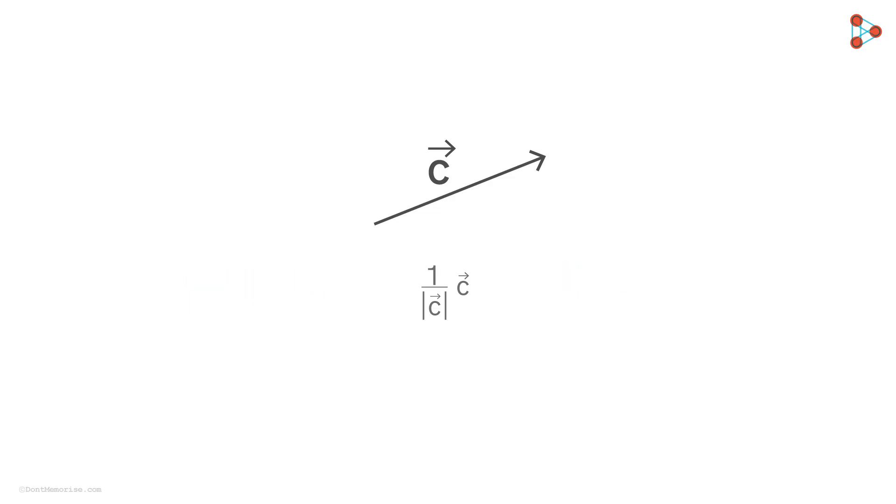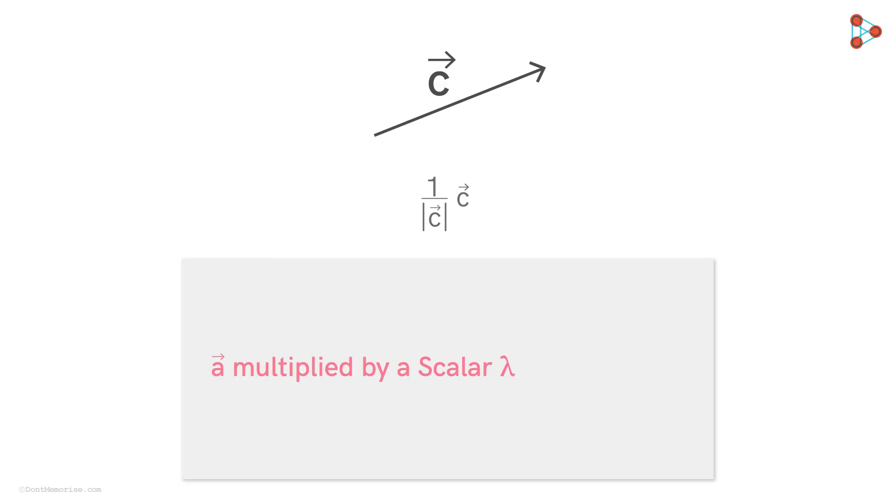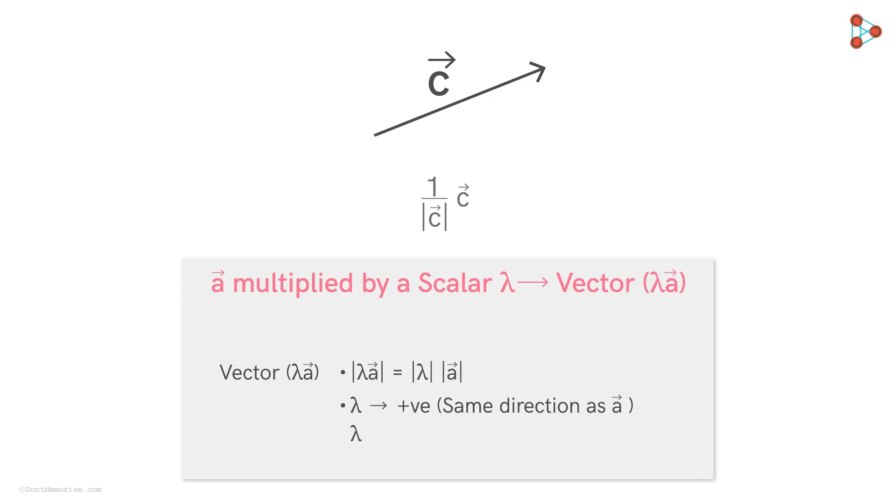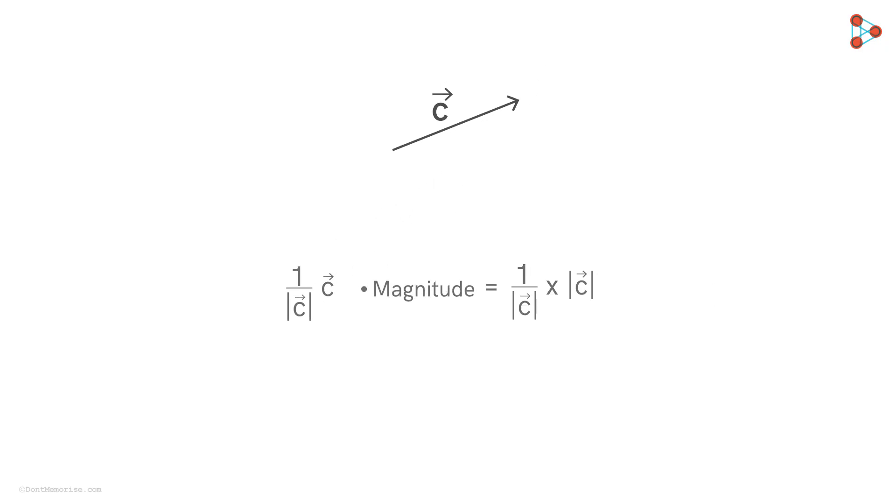Ok, let's see. Remember we have seen that multiplying a scalar lambda, that is a number lambda by a vector a, gives us a new vector. The magnitude of this new vector is equal to the absolute value of lambda times the magnitude of vector a. And its direction is the same as that of vector a, if lambda is a positive number, or opposite to that of vector a, if lambda is a negative number. So let's look at our question again. Here we multiply by the number 1 over magnitude of vector c. So the magnitude of the new vector will be this, which turns out to be 1. And since the number is a positive number, the direction of the new vector will be that of the vector c.